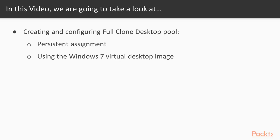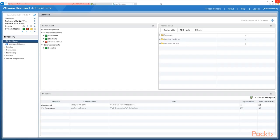In this particular video we're going to create a desktop pool which will use a full clone image of the Windows 7 gold image that we created. This pool will also have a persistent assignment, meaning that the user will effectively own their own desktop. So we're going to go ahead and create our first desktop pool for our Windows 7 gold image.